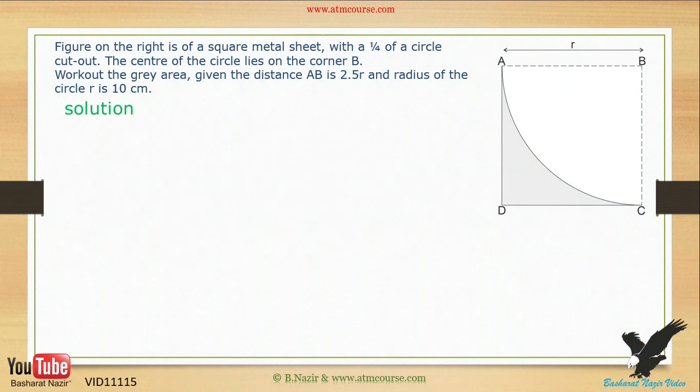There are two key information in this question. First key information is distance AB is 2.5R. Write this down after the solution. Second key information is that the radius R of the circle is 10 cm. Write this down.